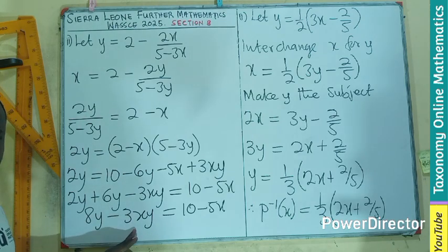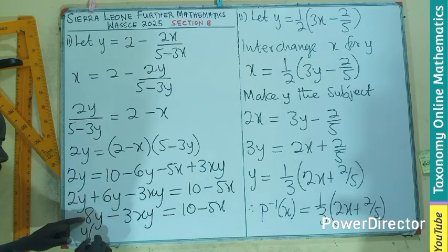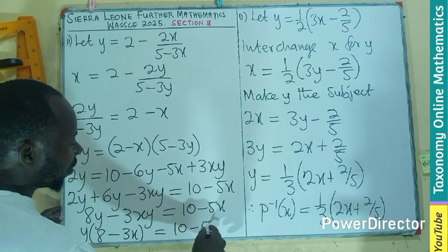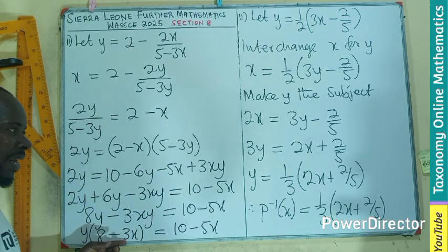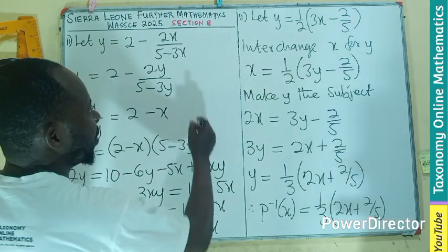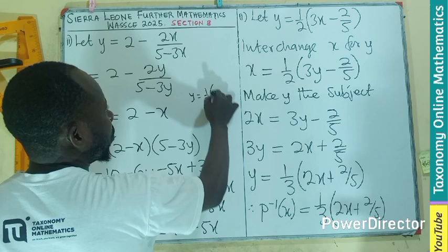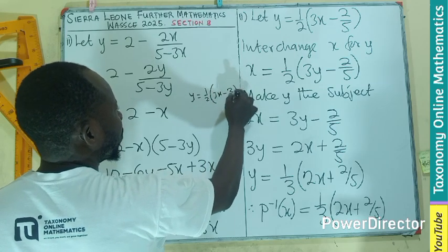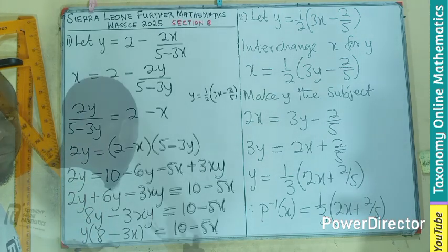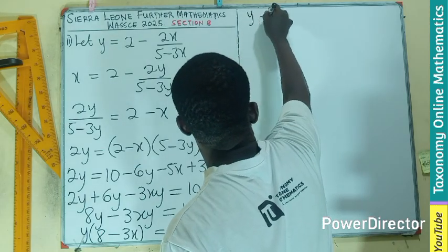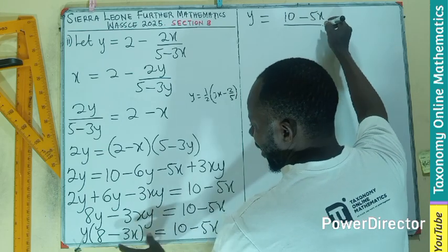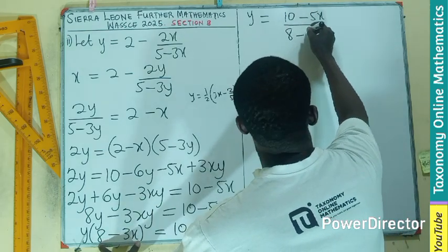The only thing I need is Y, which is in two places. So I can factorize that Y out, leaving eight minus three X equals to ten minus five X. What is left is to divide by this bracket. But before we clean, let's keep this in mind. So right from here, I am only going to have my Y equals to ten minus five X divided by the coefficient here, eight minus three X.